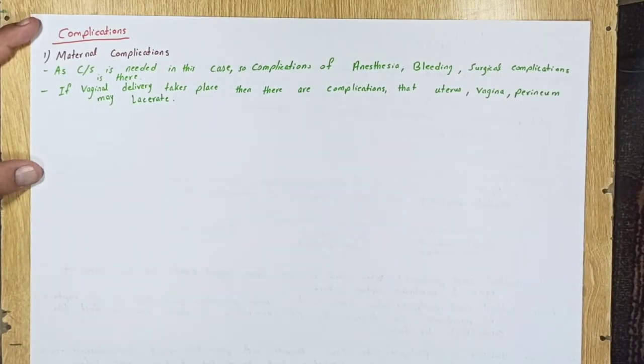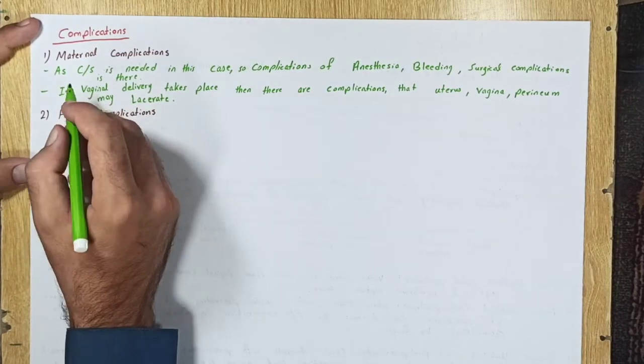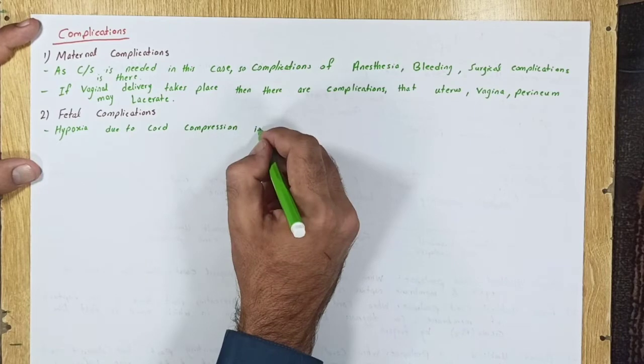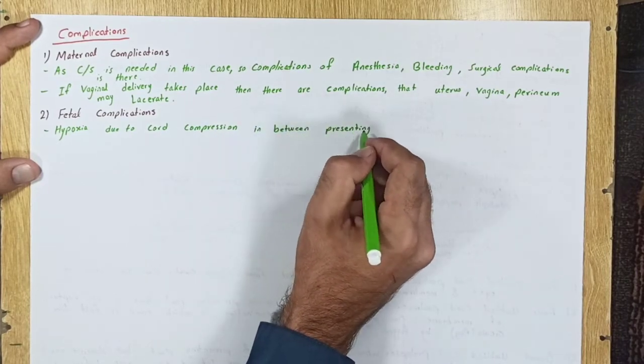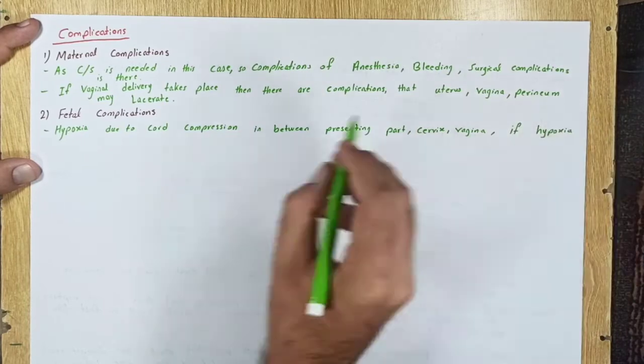Fetal complications: Hypoxia due to cord compression in between presenting parts, cervix, and vagina. If hypoxia elongates, brain damage and death can occur.